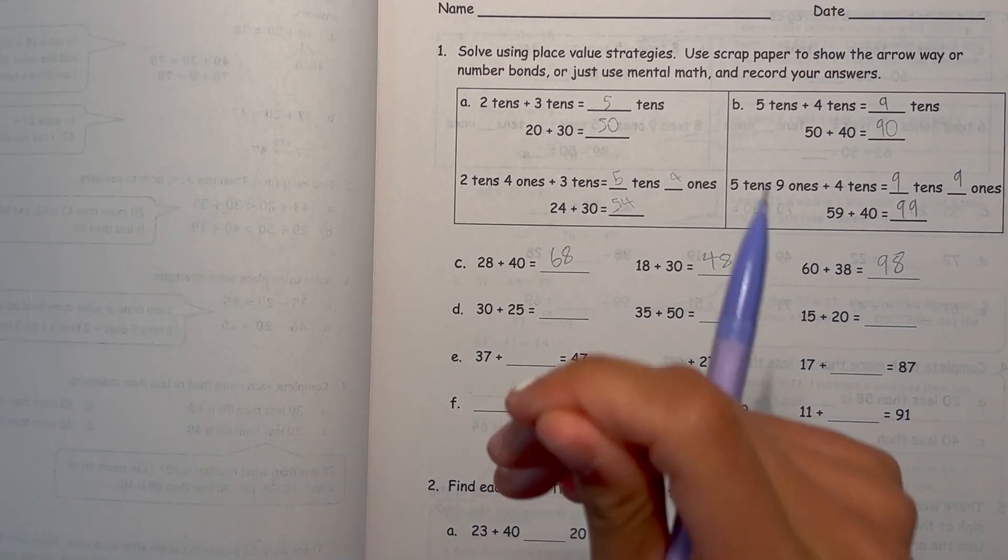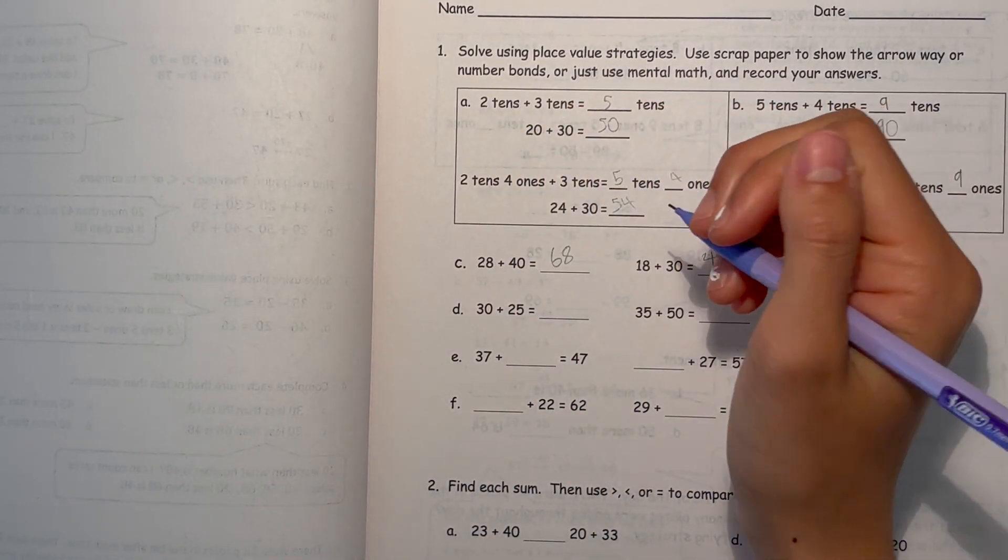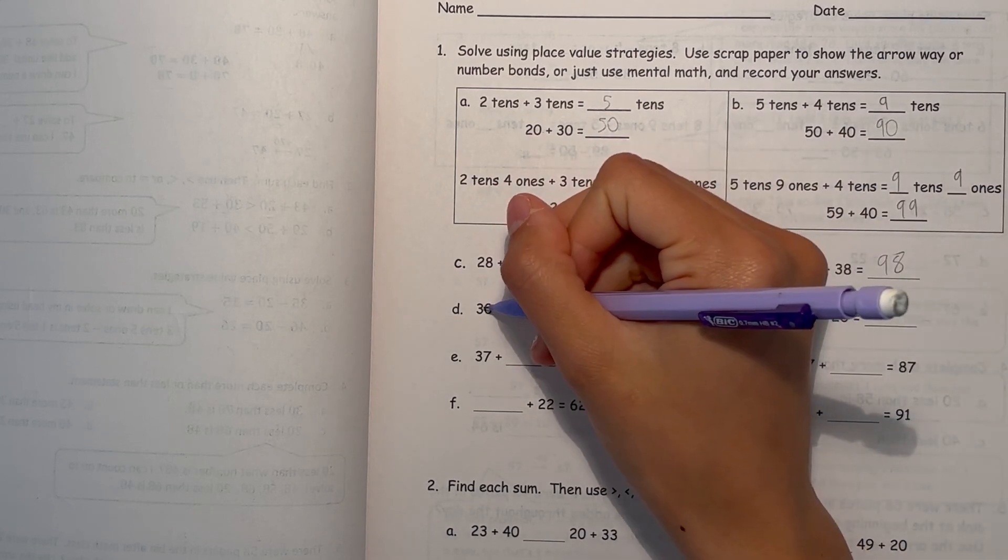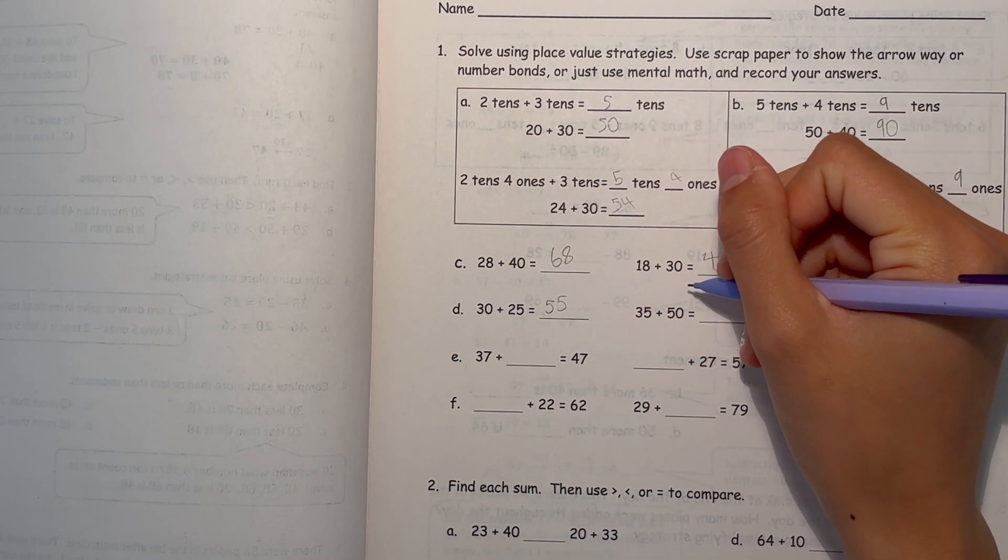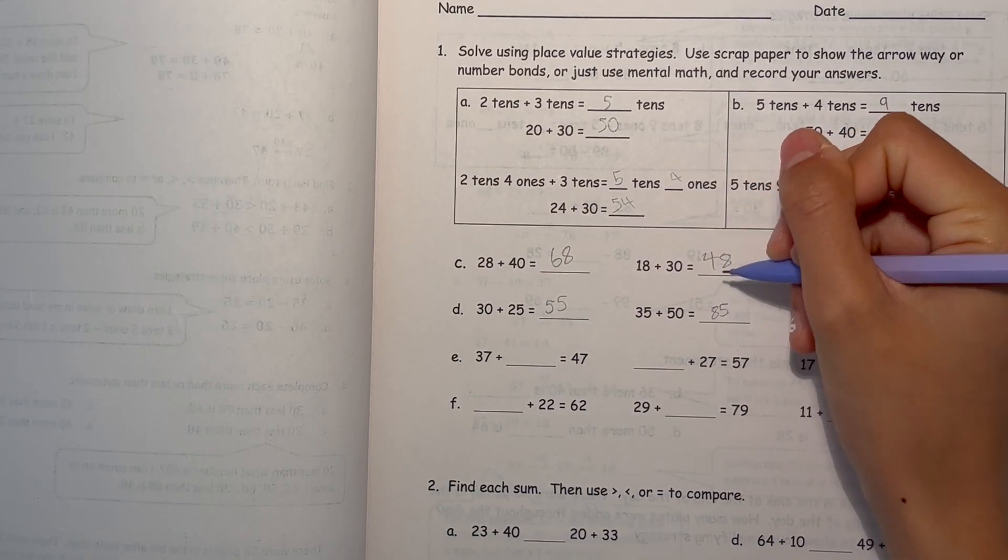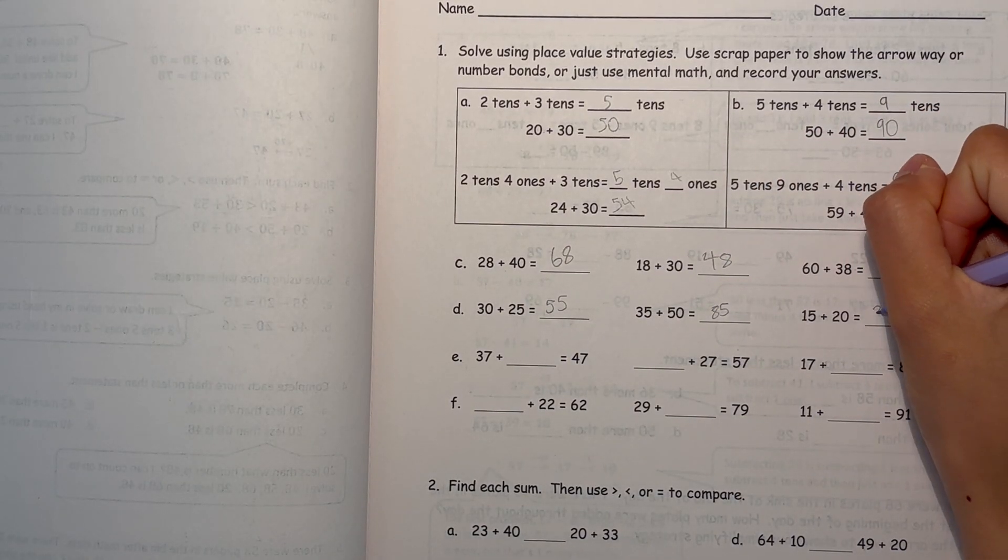Alright, now D, 30 plus 25. Well, it's simple. So that's 55. 35 plus 50, that's 85. 15 plus 20 is 35.